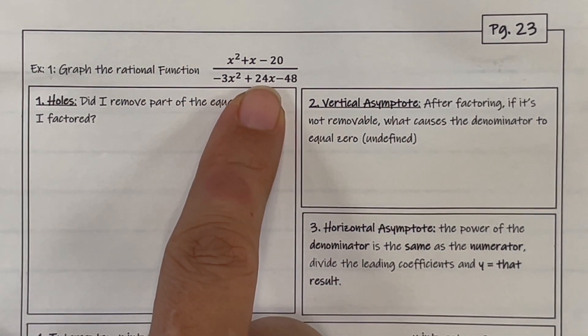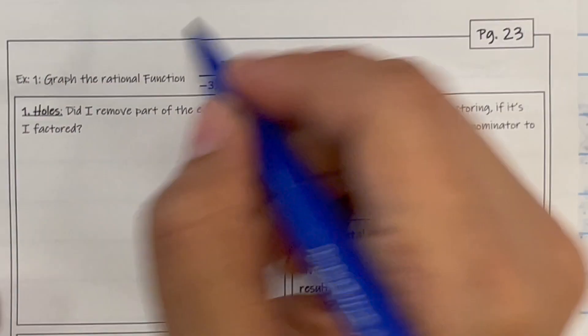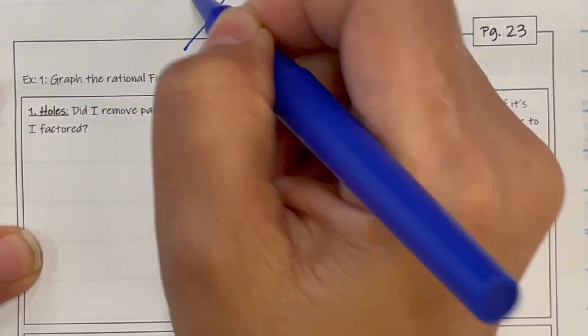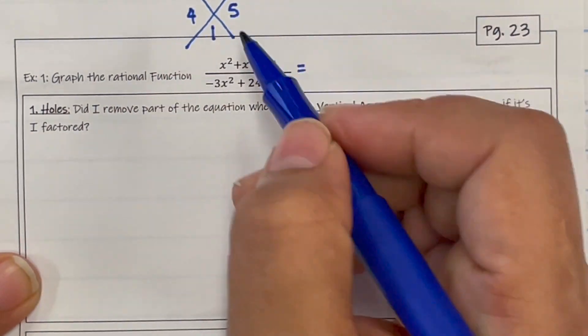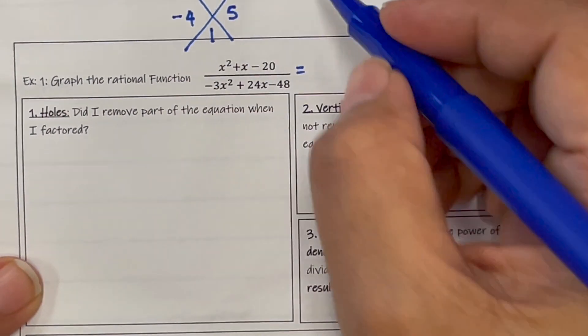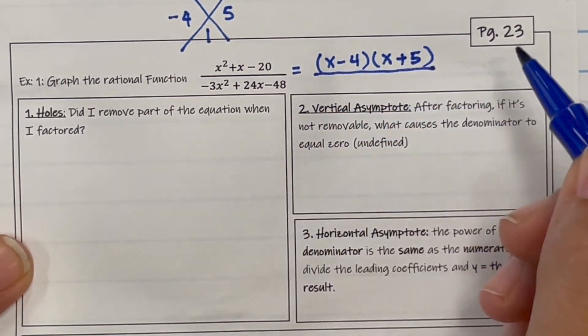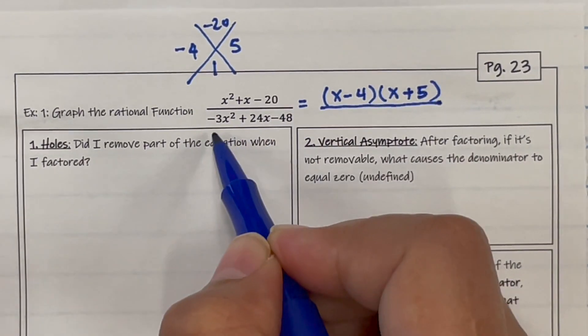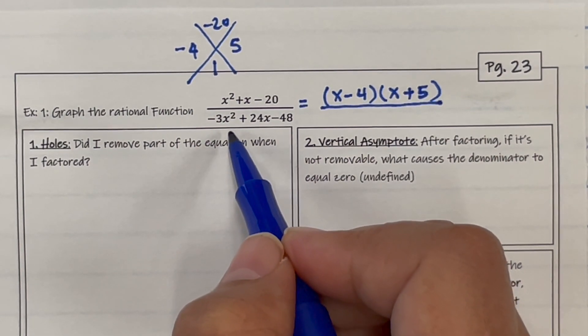Let's go ahead and start off our question by factoring, as always. So are there any holes? Two numbers that multiply to negative 20 and add to 1. So 4 and 5, and I need the 4 to be negative because it needs to be positive 1. Now on the denominator, let's factor out negative 3 because I like my x squared to be positive.